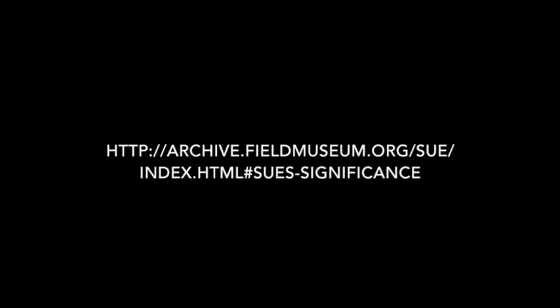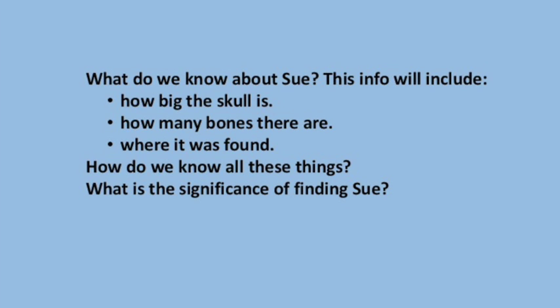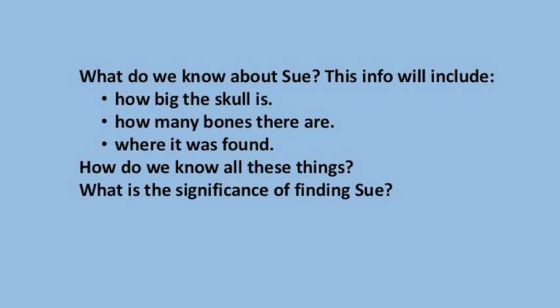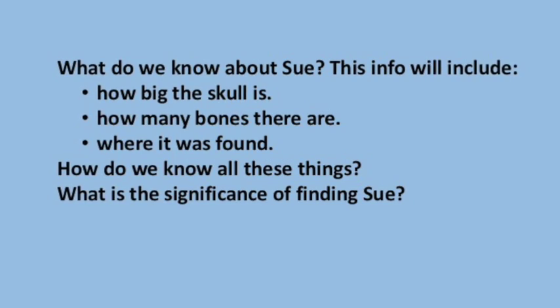The Field Museum of Natural History, also known as the Field Museum, is a natural history museum in Chicago and one of the largest such museums in the world. Sue the T-Rex is a fossil on display there. With your class, go to the website and tab through the various sections: Sue's Significance, Sue's Vital Stats, Sue's Senses, and Sue's World. Students will gather information from this site to answer the following questions: What do we know about Sue — including how big the skull is, how many bones there are, where it was found — how do we know all these things, and what's the significance of finding Sue? After answering and discussing those questions, go to the link below for a two-minute Discovery Education video which discusses fossilization nicely.